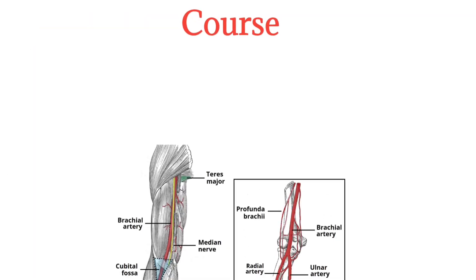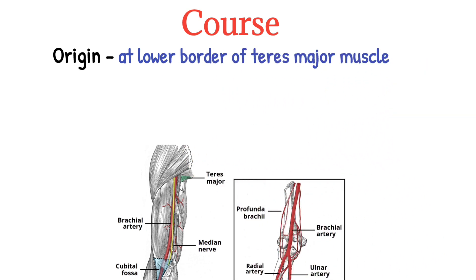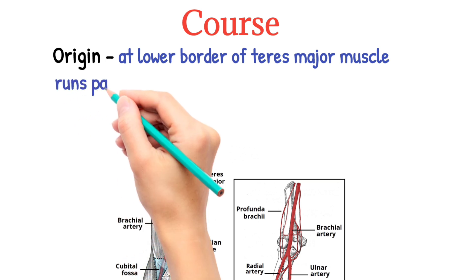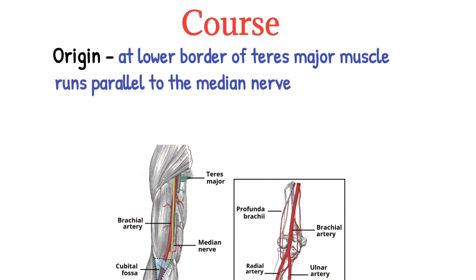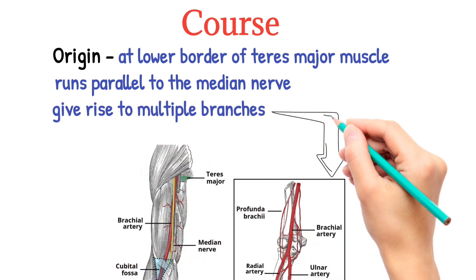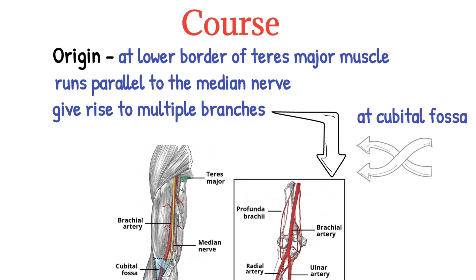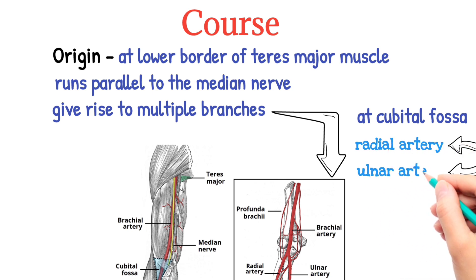Course of the brachial artery. The brachial artery begins at the lower border of the teres major muscle. It runs along the ventral surface of the arm and parallel to the median nerve, which is the main nerve for the forearm. It also gives rise to multiple smaller branches before reaching the cubital fossa, where it divides into its terminal branches — the radial and ulnar arteries of the forearm.